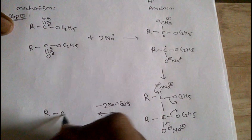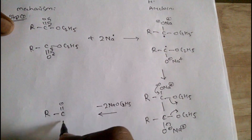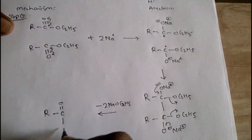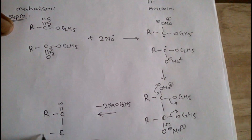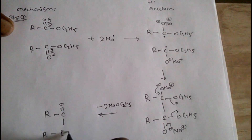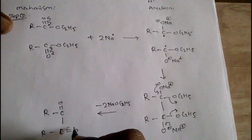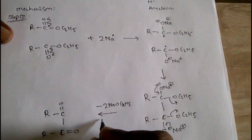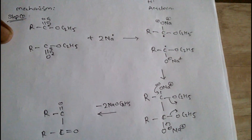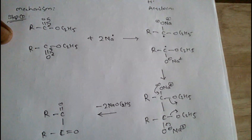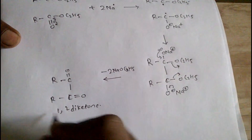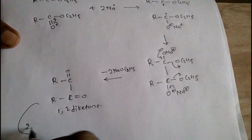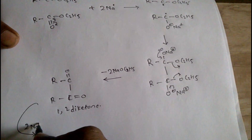We get R-C(=O)-C(=O)-R. We get a 1,2-diketone. Further it reacts with 2 moles of sodium radical.